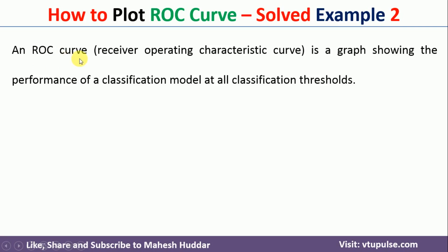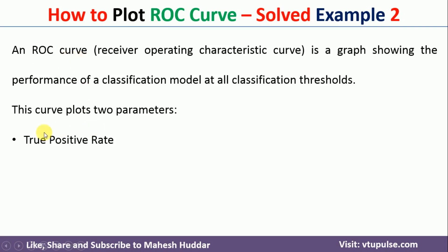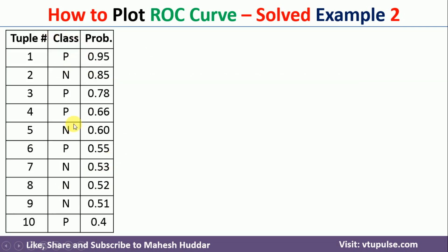If you want to draw an ROC curve, we need to know two parameters: the first one is true positive rate and the second one is false positive rate. We have been given a dataset with 10 different thresholds, along with the actual class and the calculated probability. Sometimes the given probabilities may not be in decreasing order, so first we need to arrange those probabilities in decreasing order and then start building the ROC curve.